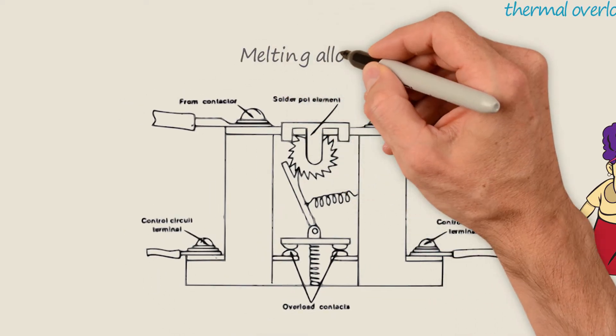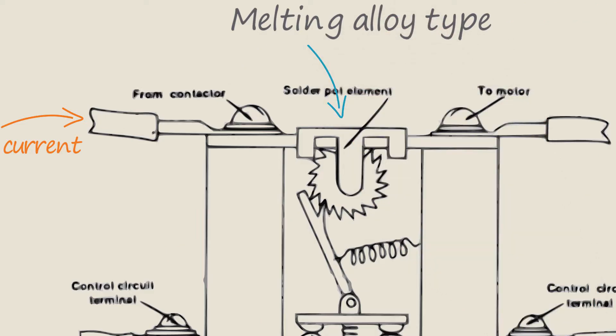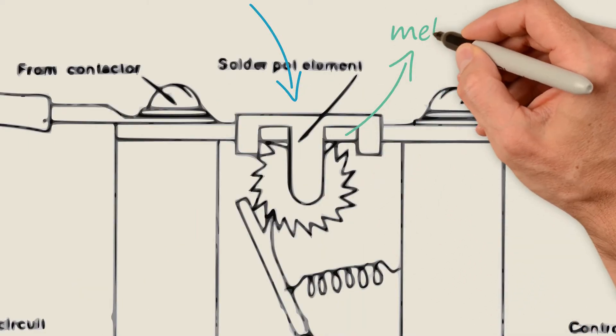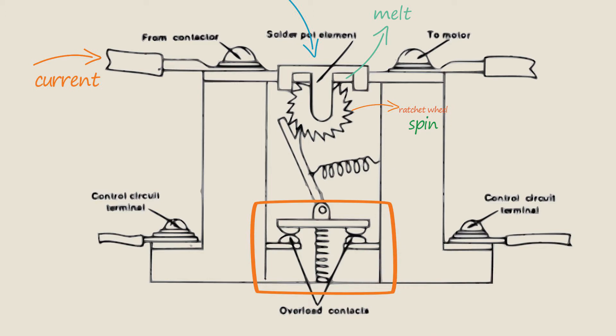In melting alloy type, the motor current passes through a small heater winding. The heat causes a special solder to melt, allowing a ratchet wheel to spin, and this opens the control circuit contacts.